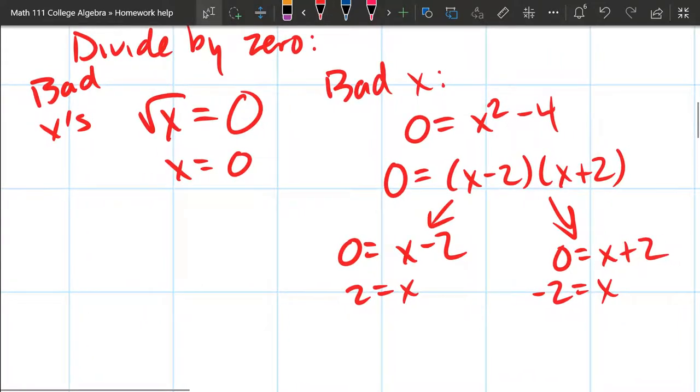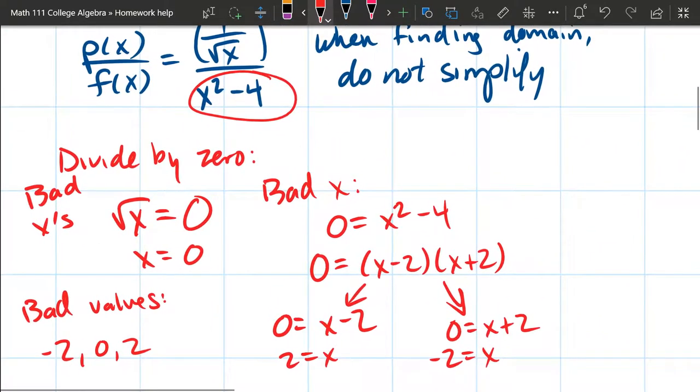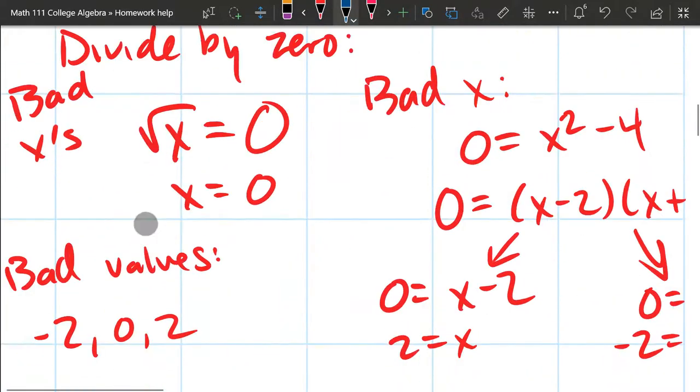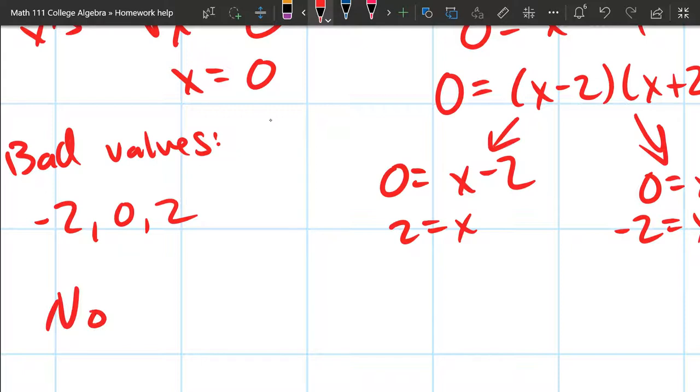Now remember, we were looking for bad x's. So all the x's on the screen that you're looking at are all ones you should not use. So bad values we got, if I write them in order, negative two, zero, two. Alright, is that all we have to watch out for? Nope. That's all the dividing by zero we have to watch out for. There's still a square root x. We cannot have a negative square root. So let's go ahead and deal with that right now. So we got no negative square roots.